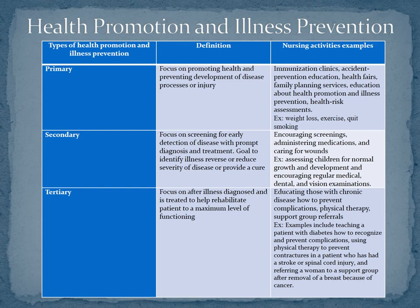The primary level focuses on promoting health and preventing the development of disease or injury. Nursing activities at this level include immunization clinics such as giving flu shots, accident prevention education, blood pressure screenings at health fairs, family planning services, educating the public about health promotion, and health risk assessments such as helping with an exercise clinic or quit-smoking clinic.